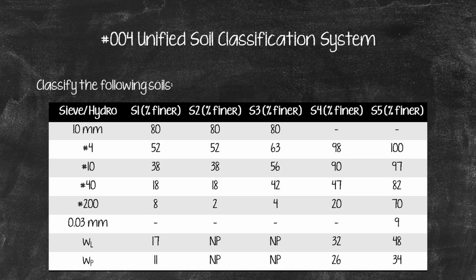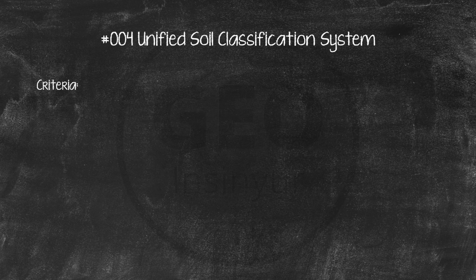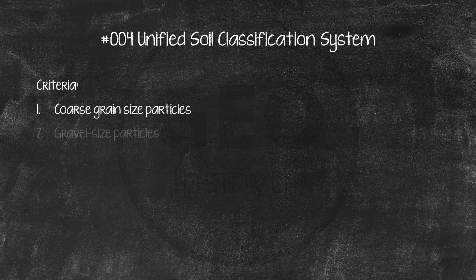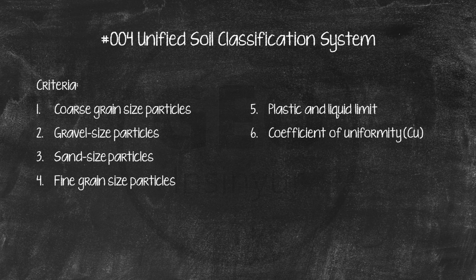Example: Classify the following soils. The soils are classified based on these criteria: coarse-grained particles are retained on the No. 200 sieve (0.075 mm); gravel-sized particles are retained on the No. 4 sieve (4.75 mm); sand-sized particles pass the No. 4 sieve and are retained on the No. 200; fine-grained particles pass the No. 200. Also needed are the plastic and liquid limits, coefficient of uniformity (Cu), and coefficient of curvature (Cc).